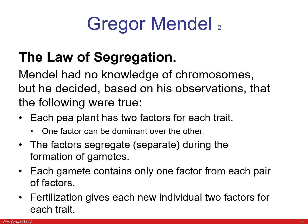The Law of Segregation. Mendel had no knowledge of chromosomes, but based on his observations he concluded the following: each pea plant has two factors for each trait, one factor can be dominant over the other, and they separate during the formation of gametes or sex cells. Each gamete contains only one factor from each pair of factors. Fertilization of sperm and egg gives each new individual two factors for each trait.